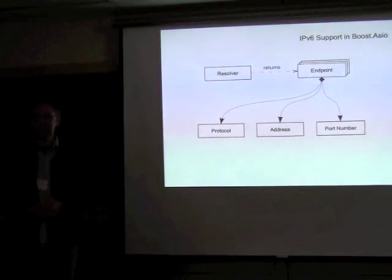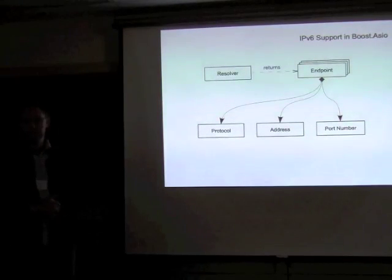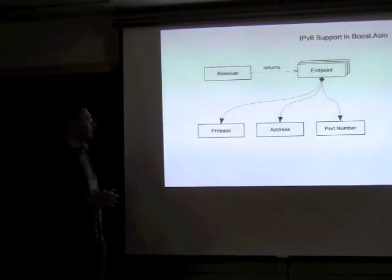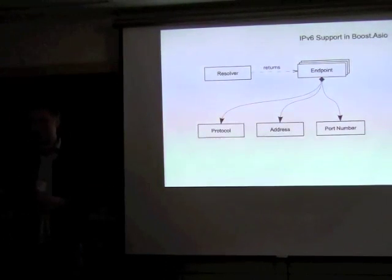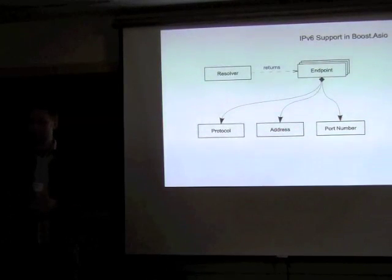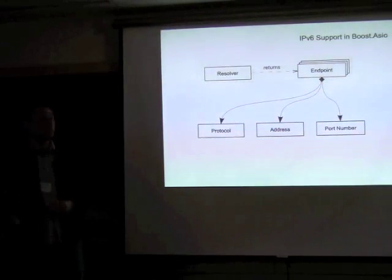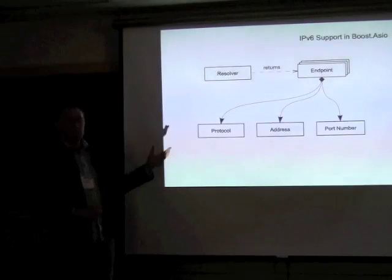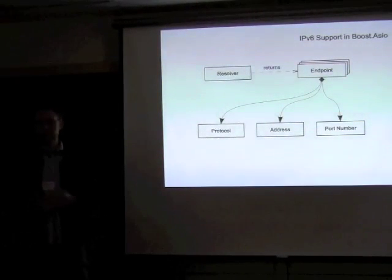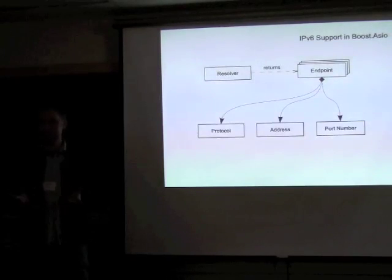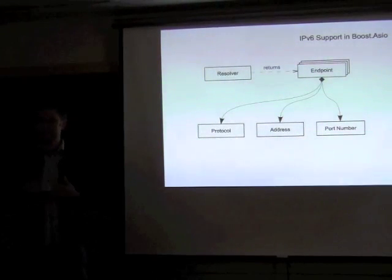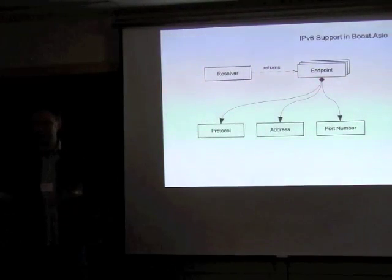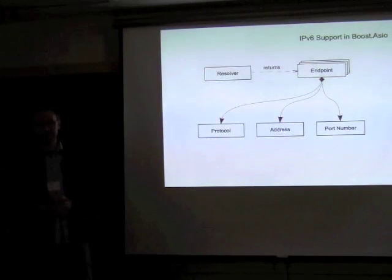The classes that make up the API have this relationship. Usually when starting a client program you need to resolve addresses from DNS, and that's what the resolver is for. The resolver in ASIO returns a list of endpoints, mirroring the POSIX getaddrinfo function. Rather than just giving you a list of addresses, you pass in a host name and a service name or port number, and you get back a list of corresponding endpoints.